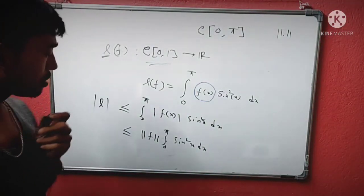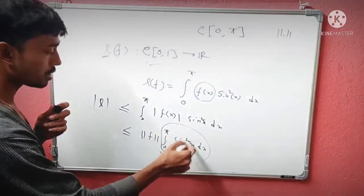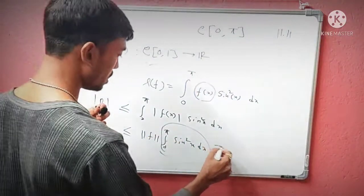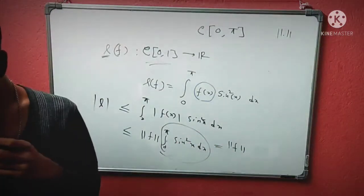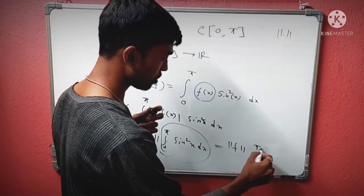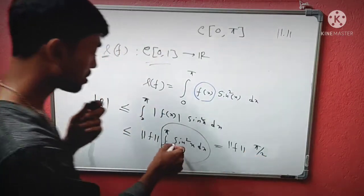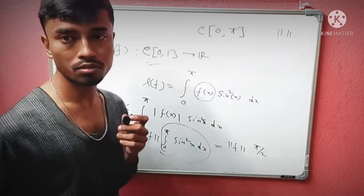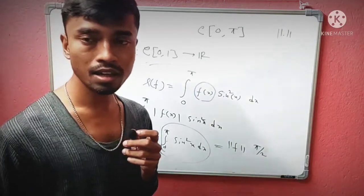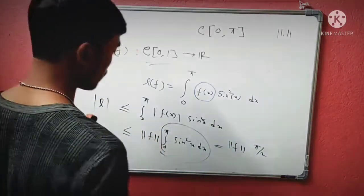With normal calculation, the value should be π/2. You multiply and divide by 2, so 2sin²x = 1 - cos(2x). Put the values in and get π/2.